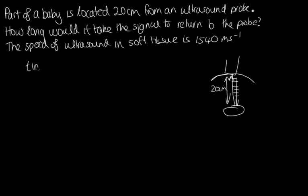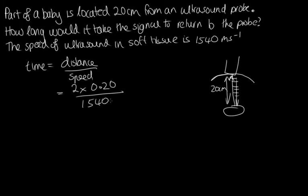Time equals distance over speed. The distance traveled is two times 20 centimeters, because it's gone down and back up. The speed is 1,540 meters per second. Solving this, we get 2.60 × 10⁻⁴ seconds for the signal to return to the probe. The computer can use this time to work out how far that part of the baby is from the probe.